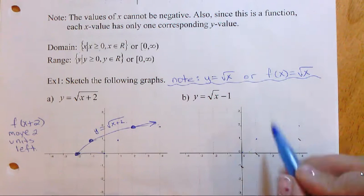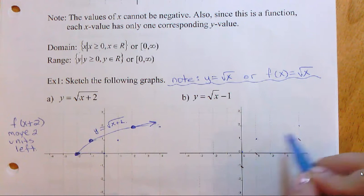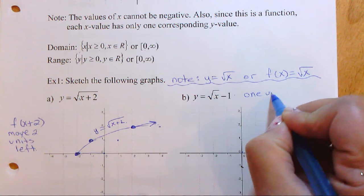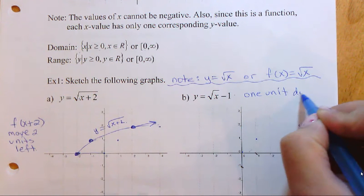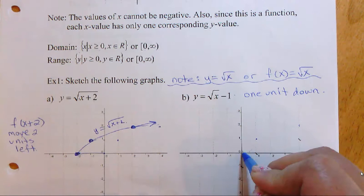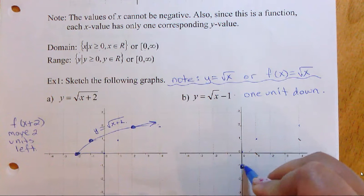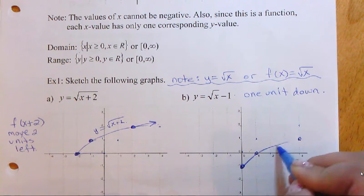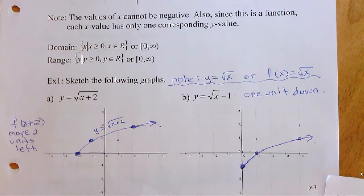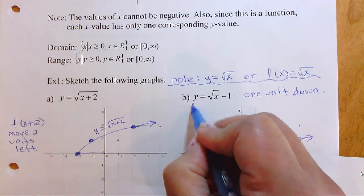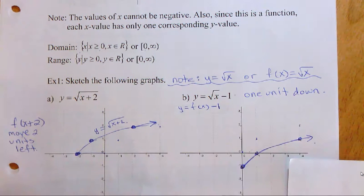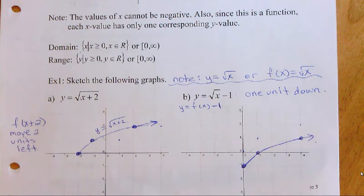For this next example, where the parent function would have been, we move one unit down. Each of the points moves one unit down from the parent. That gives us the graph for y equals square root of x minus 1. You could also write it in function notation as f(x) minus 1.